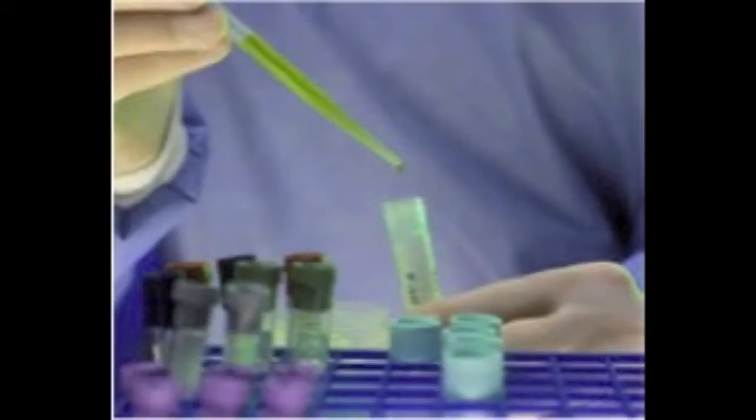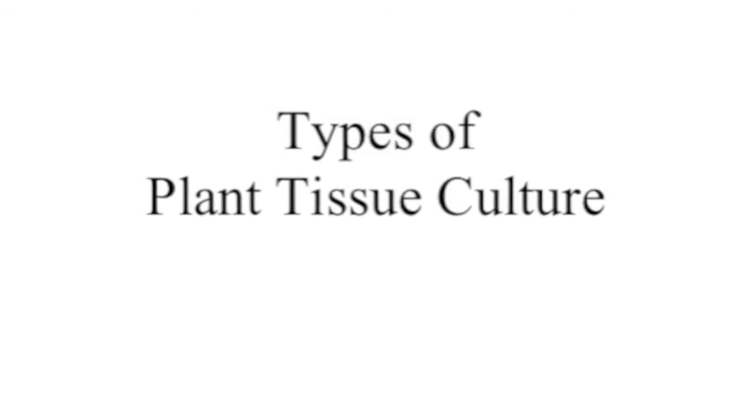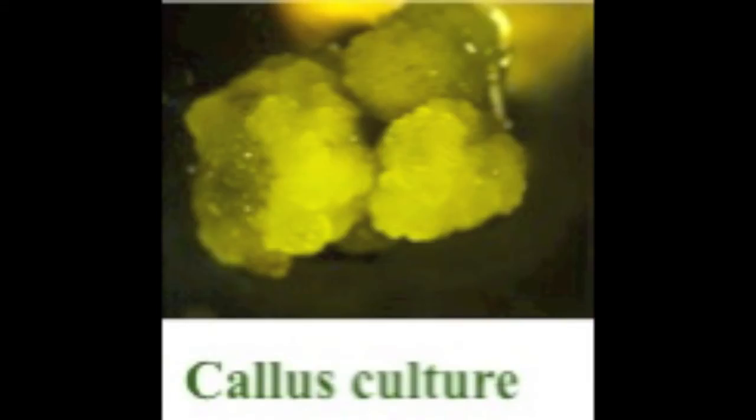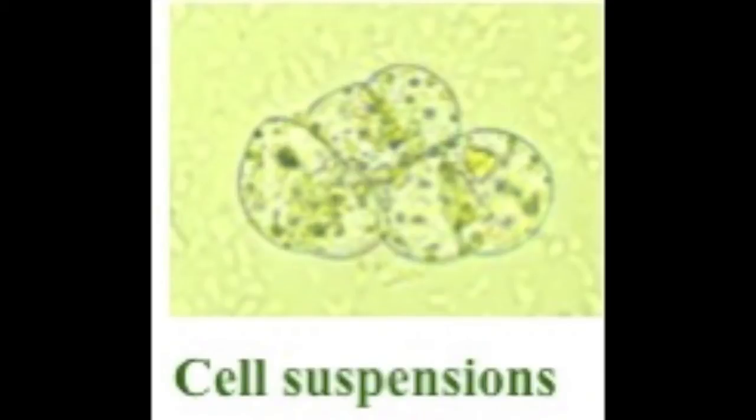Now we are going to talk about the different types of tissue cultures. Callous culture is obtained by culturing sterile pieces of plant with both an auxin and a cytokinin. It is an unorganized, growing and dividing mass of de-differentiated meristematic cells.